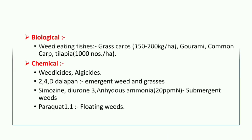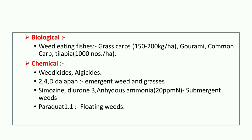In the biological method, weed-eating fishes such as Grass Carp, Gourami, Common Carp, and Tilapia are introduced into the pond. For Grass Carp, 150 to 200 kg per hectare is introduced. For Tilapia, at least 1,000 numbers per hectare are stocked.